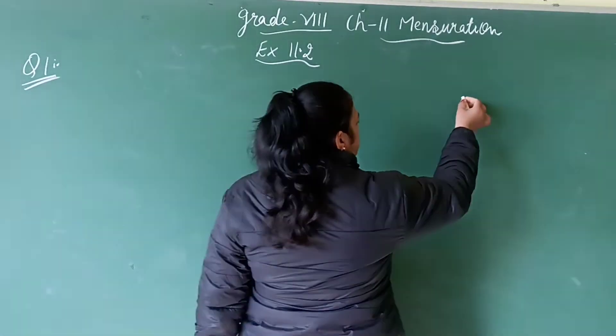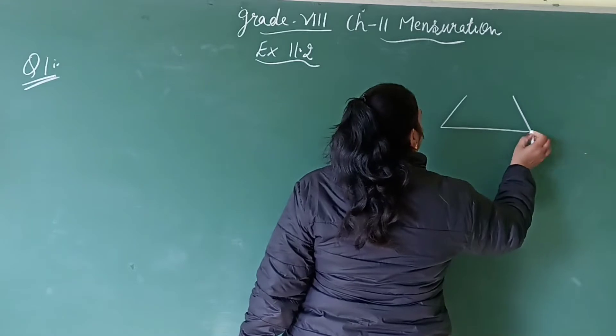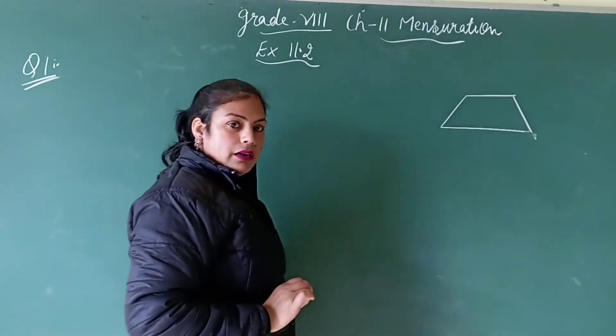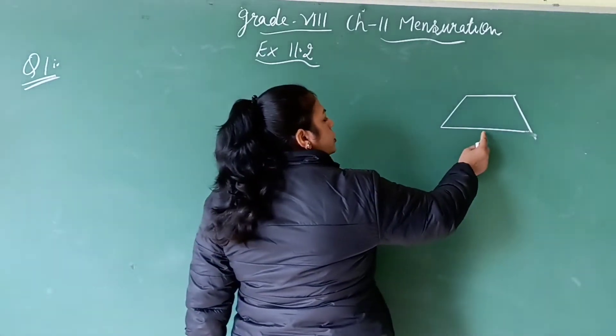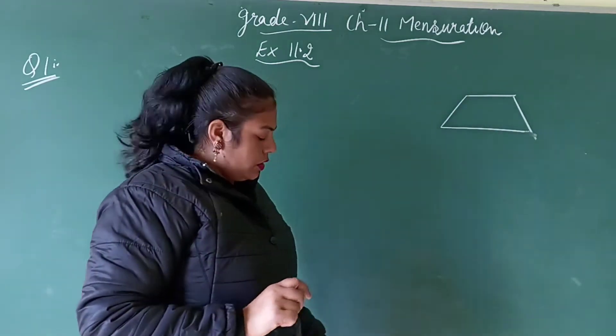So what do you mean by trapezium? Trapezium means its two sides are parallel and two are non-parallel. These sides are non-parallel and these sides are parallel. So this is a trapezium. Its area is half into sum of parallel sides into the distance between them.